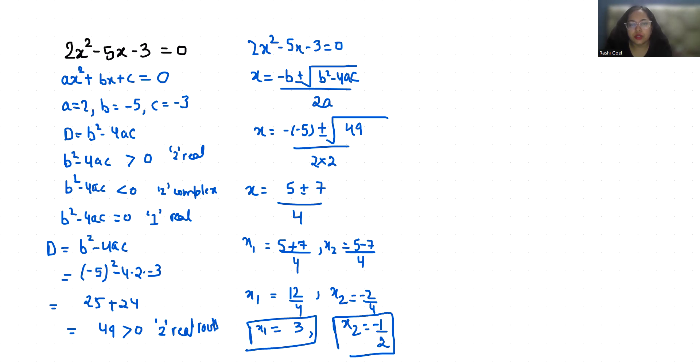This is our method 1 to calculate, or you can use method 2. Method 2 is we can write this equation and do the middle term split. This -5x we can write as -6x + 1x.